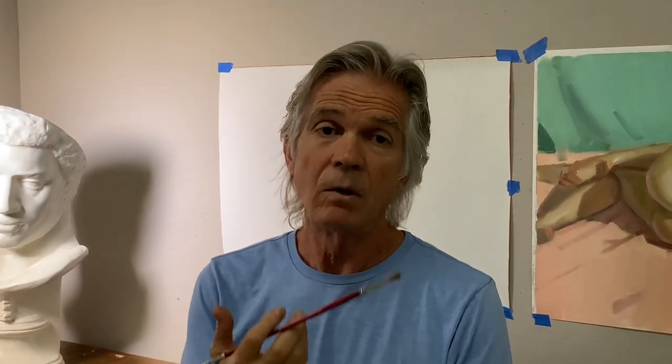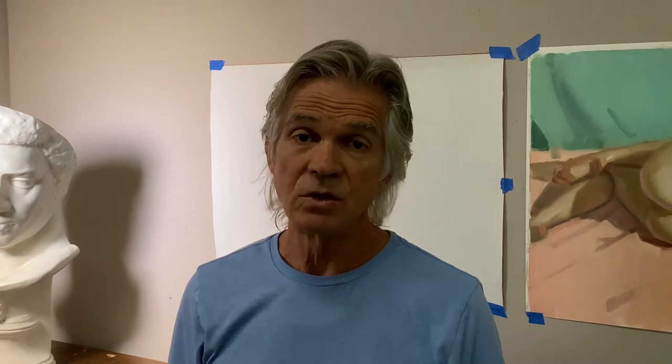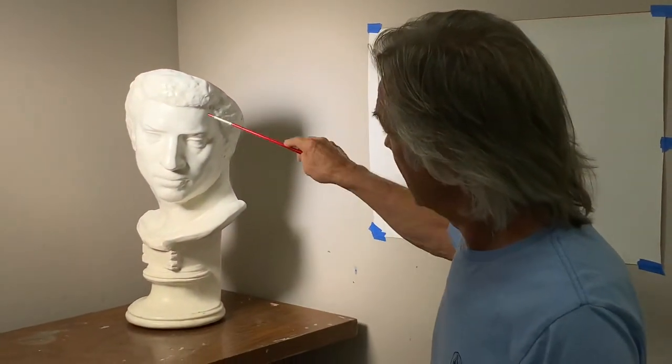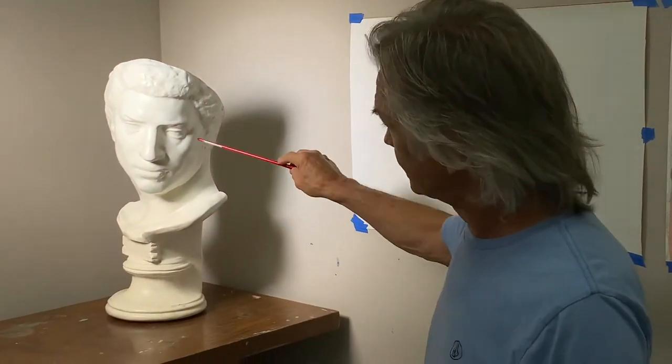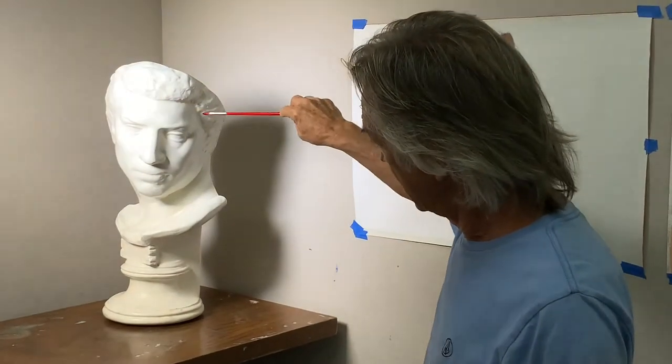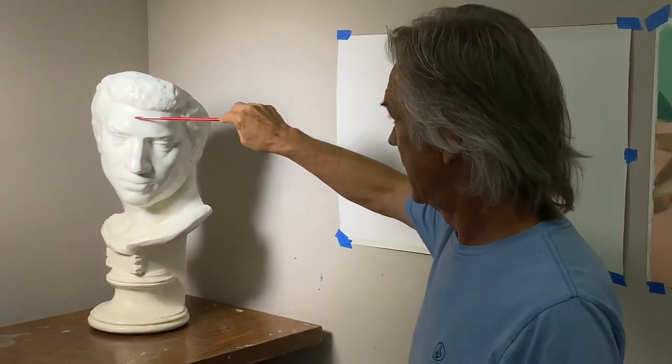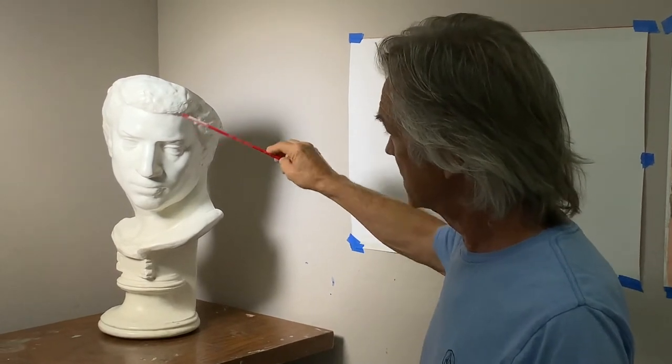All rounded forms — the figure is comprised of all rounded forms, and all rounded forms have some degree of softness. There's nothing extremely sharp representationally within our figure. And so on the head, the slowest turning form — the one that turns away from the light source the slowest — has the softest edge.